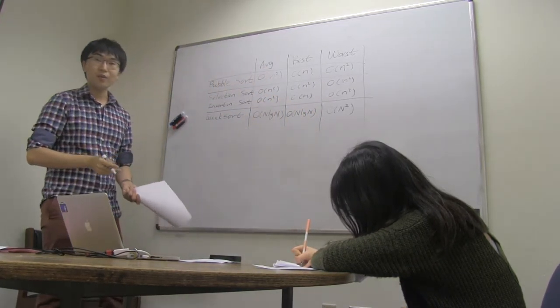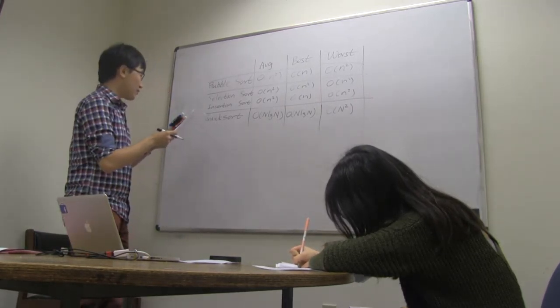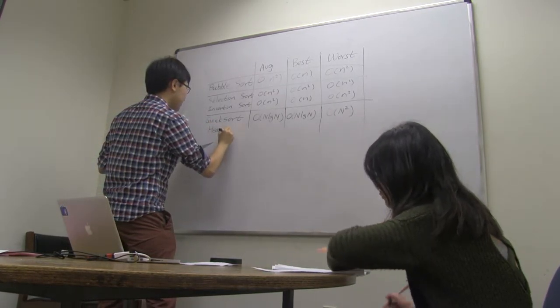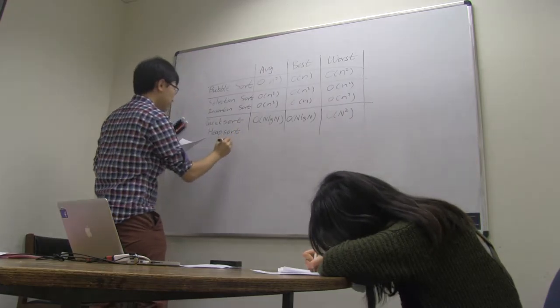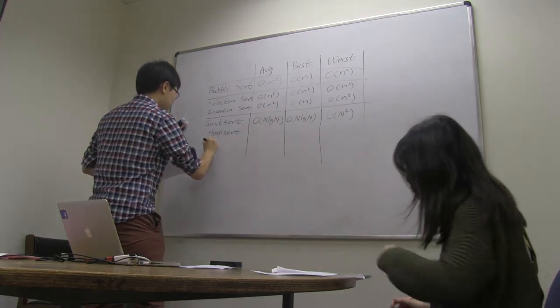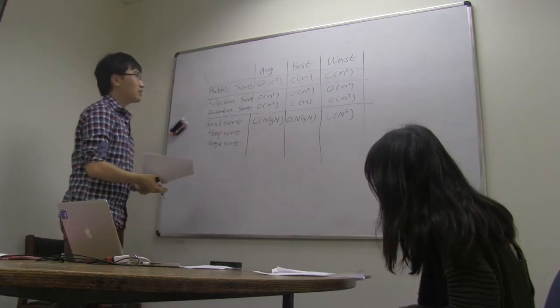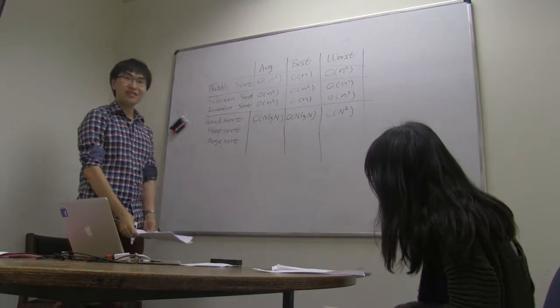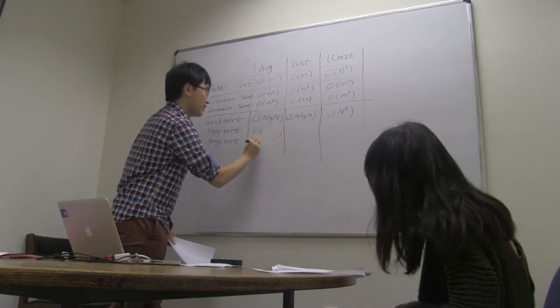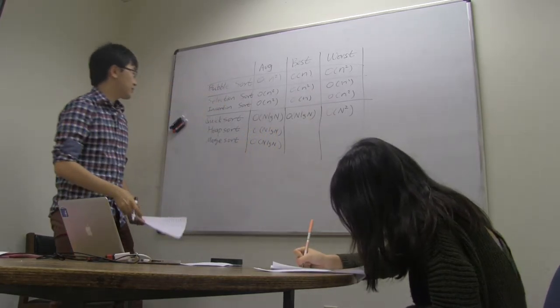So, so far, any more questions? Good, very good. Then, we also cover some other sorting algorithms. One of them is a heap sort. And one of them is merge sort. And can anyone tell me what are their average time complexity? Still n log n. Both of them? Yeah. Cool. Very good. Still n log n. Right.